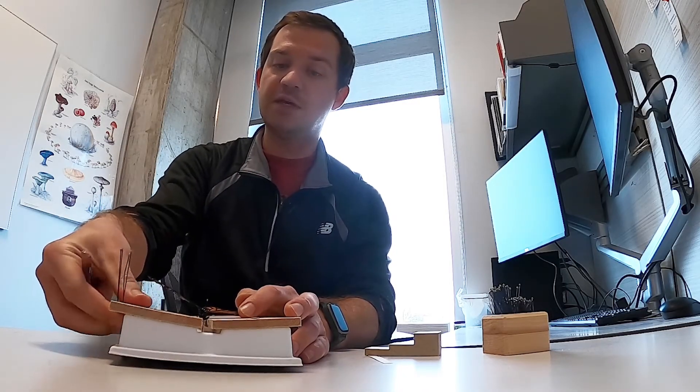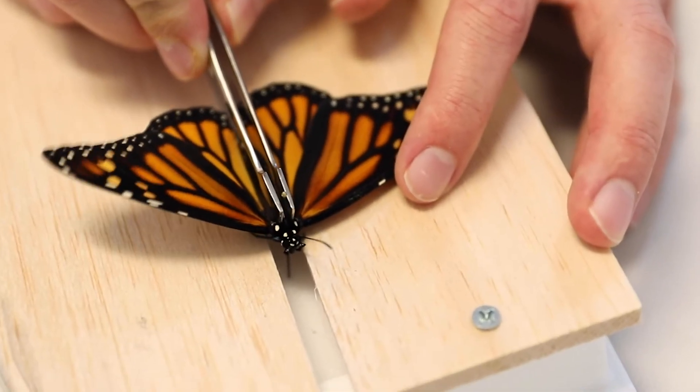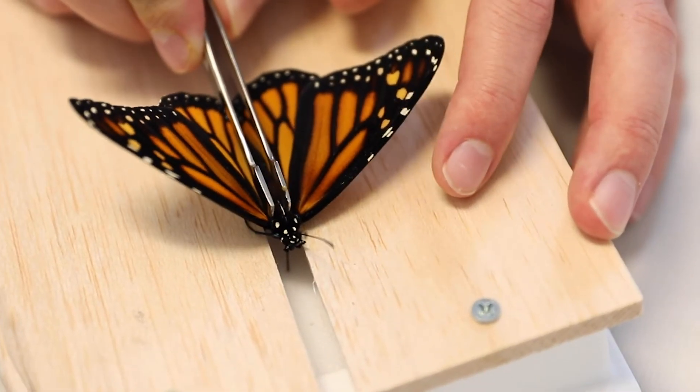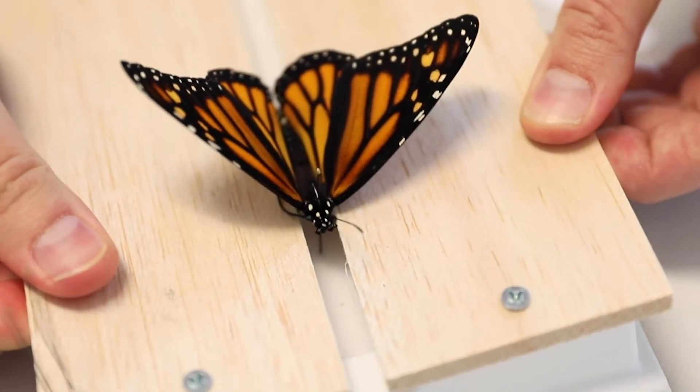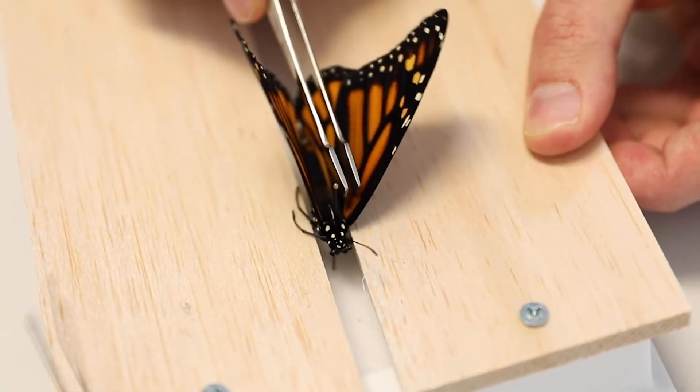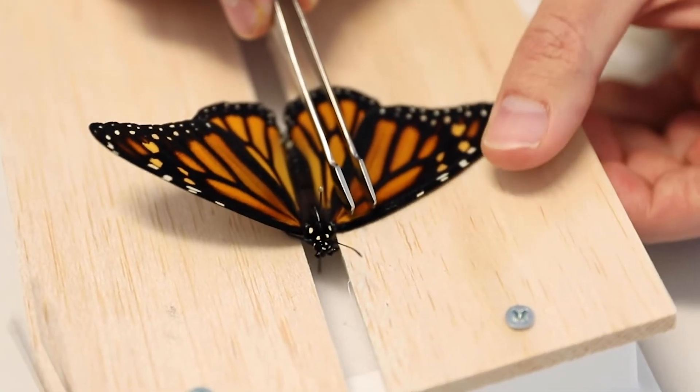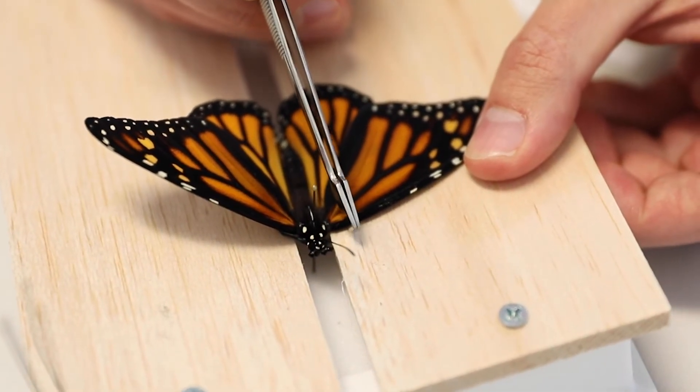What I'm gonna do is take these forceps - you could use your fingers, you just have to be really gentle especially with smaller specimens - and I'm gonna push the body down so that it goes in that little crevice there. I might have to widen this a little bit so the body actually fits properly, and I'm just going to push it down the pin a little bit until these wings, as you can see, are now perfectly flush with the wood top of the spreading board.